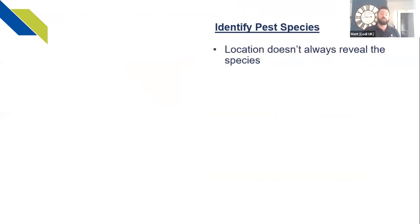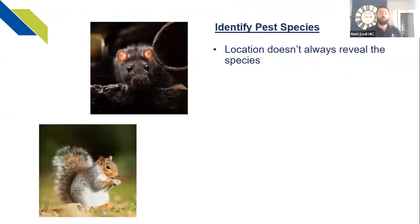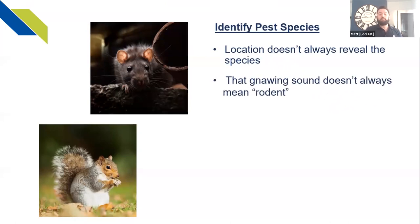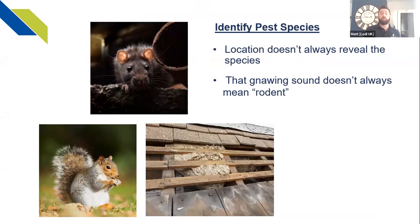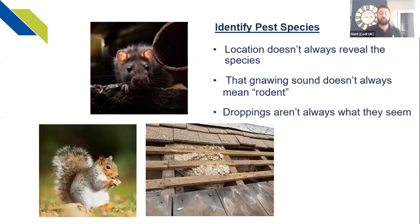Other things surveys help with include identifying pest species. A customer rings you up and says they've got a noise in the roof space — does that necessarily mean it's a squirrel or a rat? Probably not. In some cases it could be a bird, or depending on where in the country you are, it could even be a glis glis. The last thing you want is to offer a treatment over the phone without actually identifying the pest species. A customer says they've got sounds in the wall cavity — does that always mean it's rodent scratching or chewing? In some cases it could even be a wasp or bee's nest.